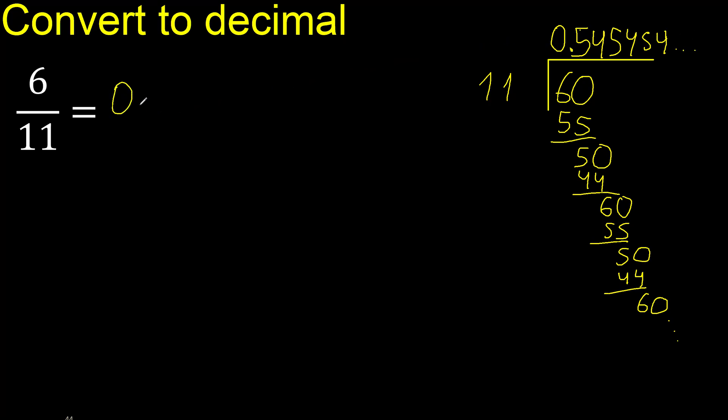Here, after the point, 54 repeats. Therefore 54 with a bar over it, like this. This is a repeating decimal. Finish.